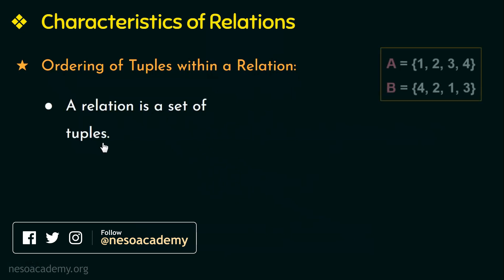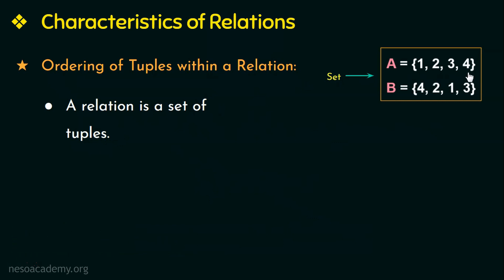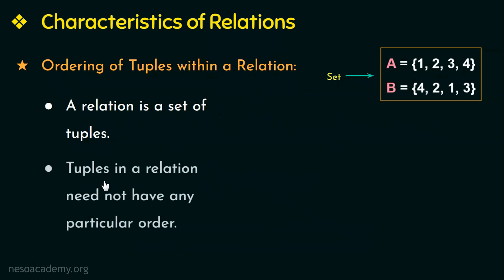Mathematically, the elements in a set do not follow any order, and as mentioned in the previous video, theoretically relational databases were based on set theory. So just like the elements of a set need not follow any order, the tuples in a relation also need not have any particular order. But when it comes to files, all the records are physically stored on disk or in memory, and since it is physically stored, it would be good to have an order among the records.